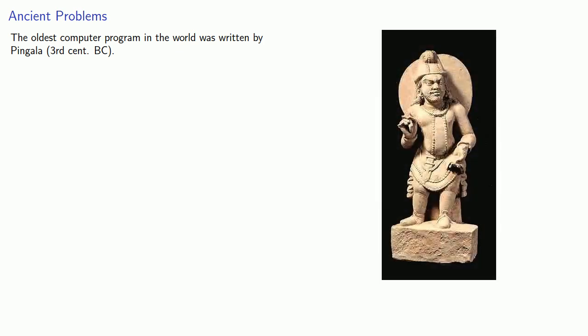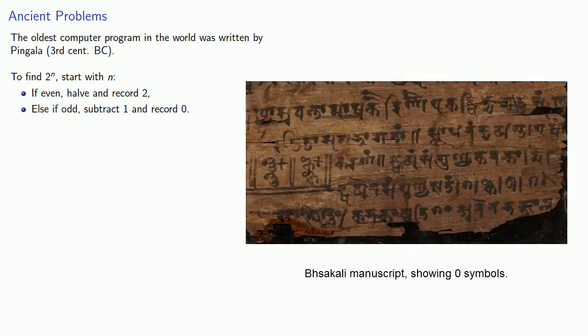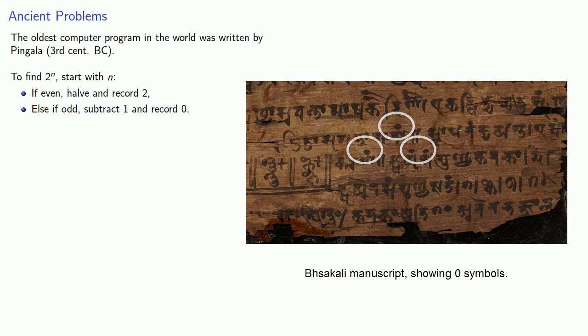Pingala's problem was to find 2 to power n, and so he described the following procedure. First, start with n. In modern terms, we might say that we initialize with our value of n. If our value is even, then halve and record 2. Else, if odd, subtract 1 and record 0. And it's noteworthy that this is the very first time the 0 symbol ever appeared, though in Pingala's description, it doesn't mean anything other than an abstract symbol that we'll record if we have an odd number.